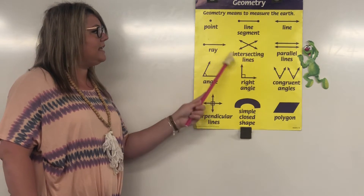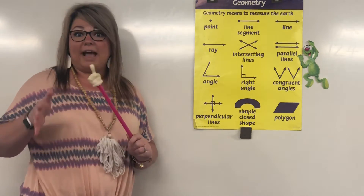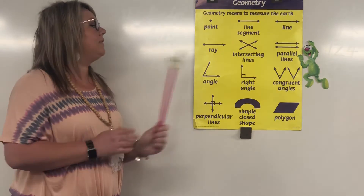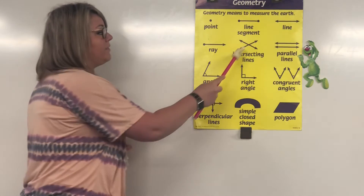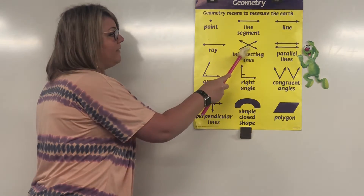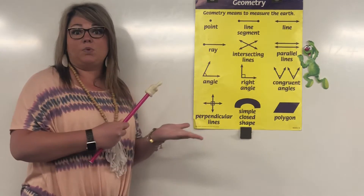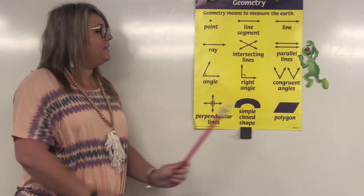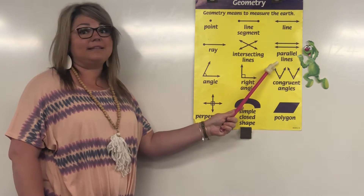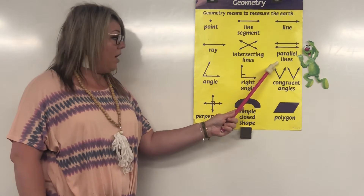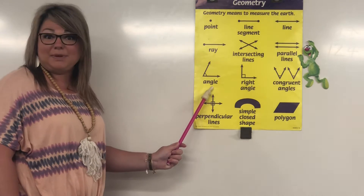Now look at these lines right here. We talked about these a lot last year. These are called intersecting lines, which means they have a point of intersection — they cross at some point. And then we have parallel lines that are two lines that do not cross. And then right here, do you guys remember what this is?